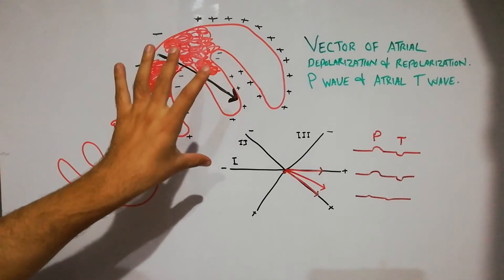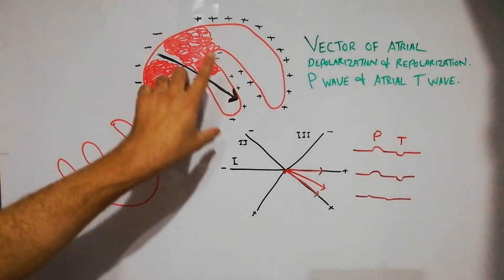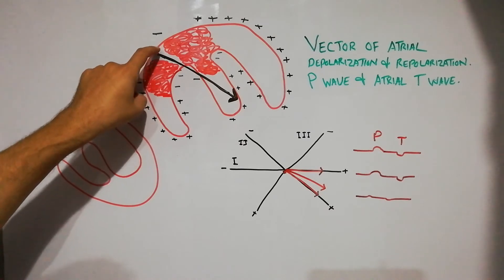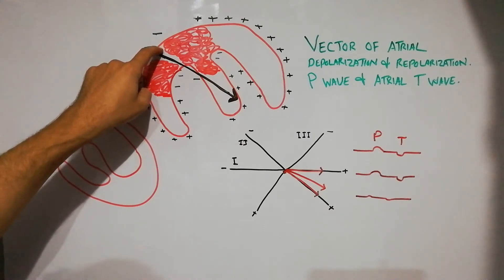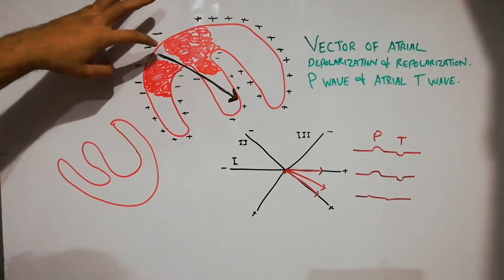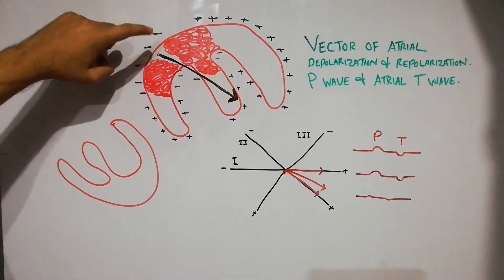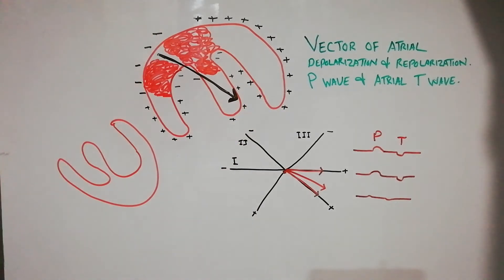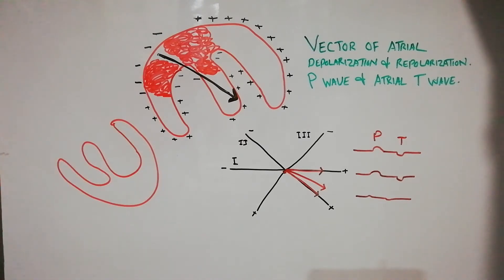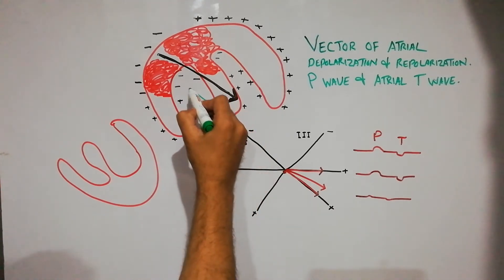As far as the repolarization, or the T wave of the atria — the atrial T wave — is concerned: because the repolarization process of the atria starts in the same place where depolarization started, one area is undergoing depolarization while another area has started becoming repolarized. Therefore, the repolarization vector is basically present in the reverse direction.